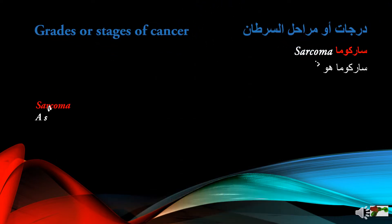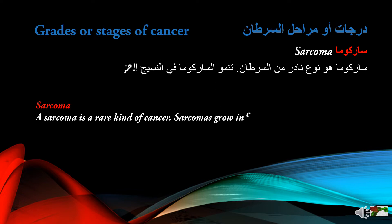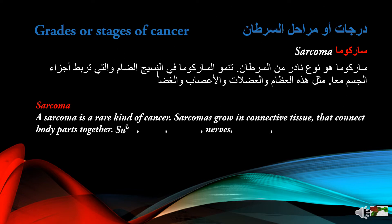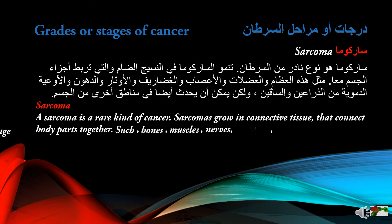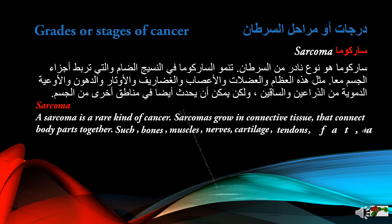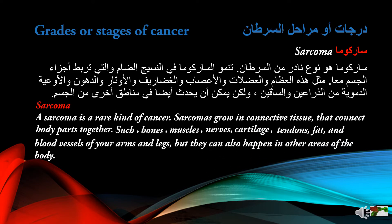A sarcoma is a rare kind of cancer. Sarcomas grow in connective tissue that connects body parts together, such as bones, muscles, nerves, cartilage, tendons, fat, and blood vessels of your arms and legs, but they can also happen in other areas of the body.